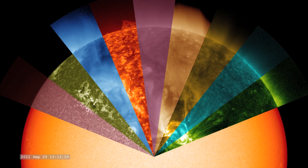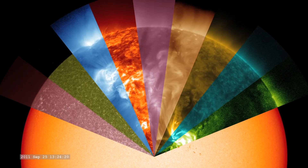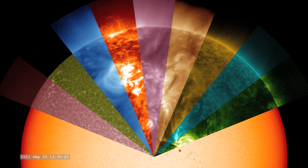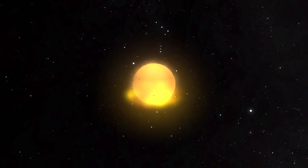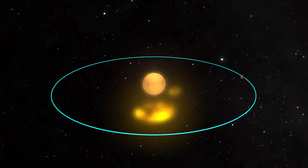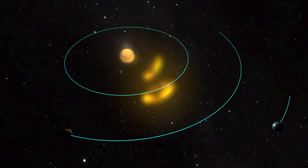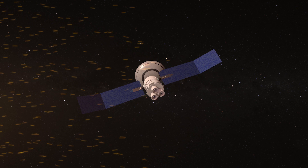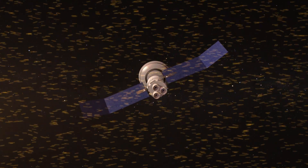The different colors correspond to different temperatures and regions on the sun. This allows us to study how the sun releases material that can travel across the solar system and affect our technology in space and on Earth.